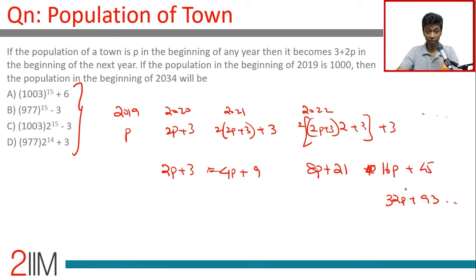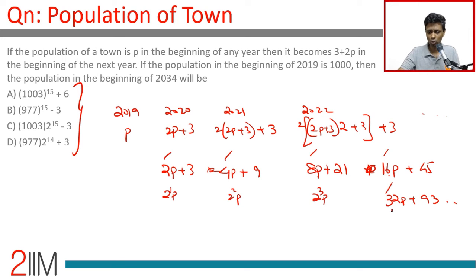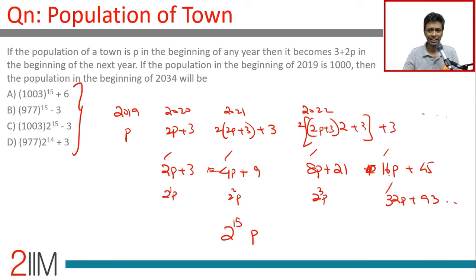The first pattern we notice is that the coefficient of p goes: 2p, 4p, 8p, 16p, 32p — that part is simple. This is 2¹·p, 2²·p, 2³·p, 2⁴·p, 2⁵·p, and so on. From 2019 to 2034 there are 15 years, 15 jumps, so we'll have 2¹⁵·p. Since p = 1000, we'll plug that in at the end.